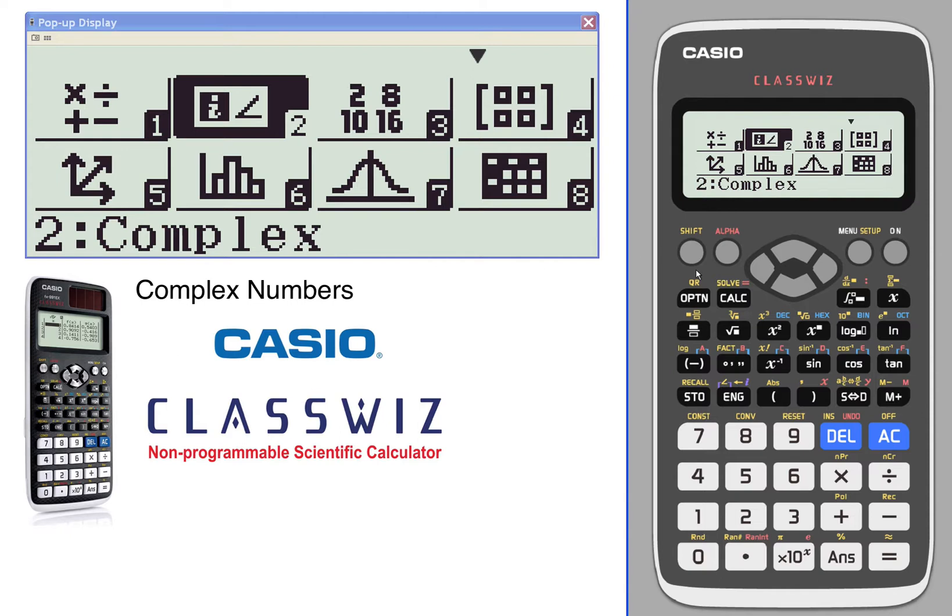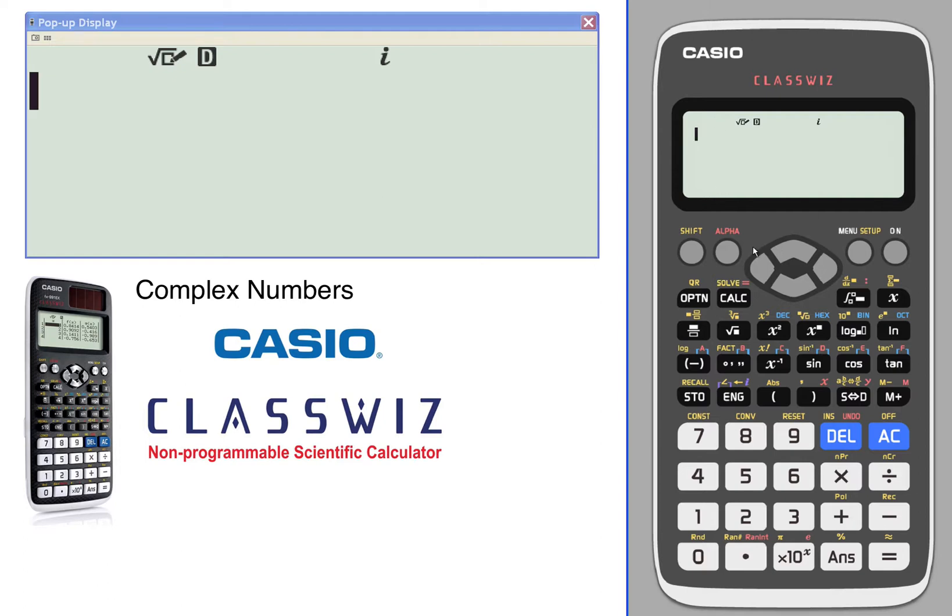Let's take a look at complex number calculations. We're going to go into the complex part of the menu, number two. Now in the complex mode, we can calculate with complex numbers: 2 + 3i. The i is the purple key which is right above the ENG.